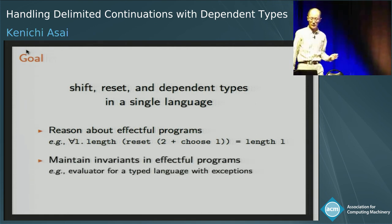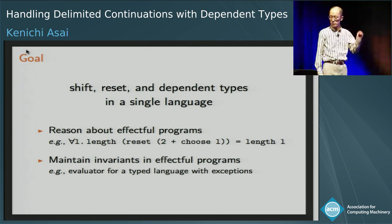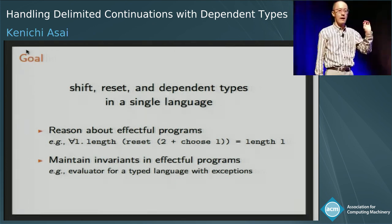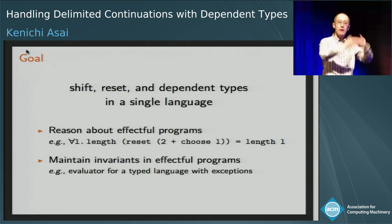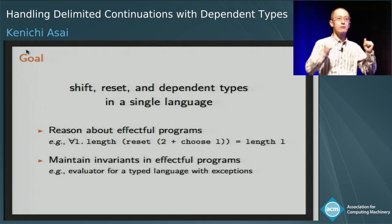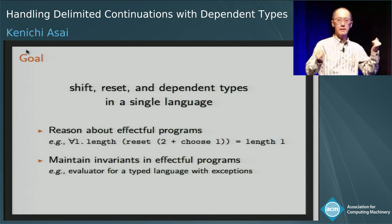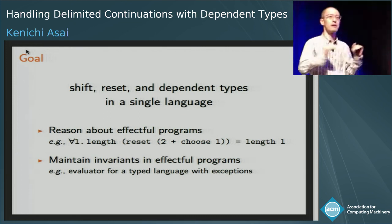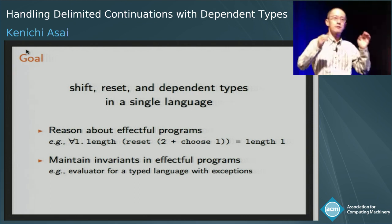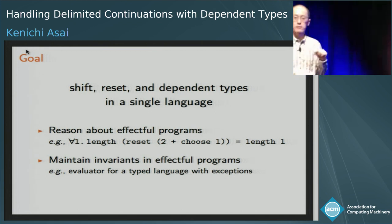Another example would be maintaining strong invariances in effectful programs. If we use dependent types, we can define a typeful term which permits only the well-typed term to be defined. Using that, we can define an evaluator for such a language in a tagless form. If we have shift and reset in this language, then we can implement such an evaluator that supports exception handling too.